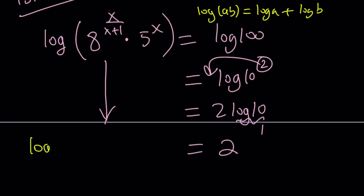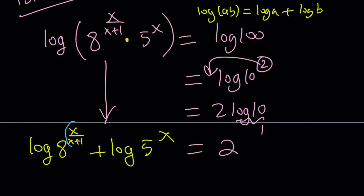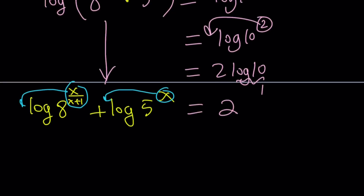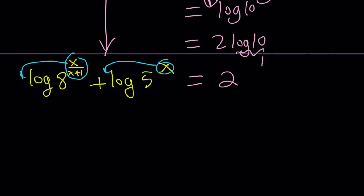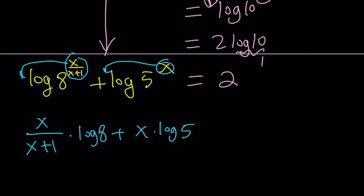So we can write this as log 8 to the power x over x plus 1, plus log 5 to the power x. Now we can go ahead and move the powers to the front, giving us x over (x plus 1) times log 8, plus x times log 5. You don't have to put the multiplication symbol — it's understood.